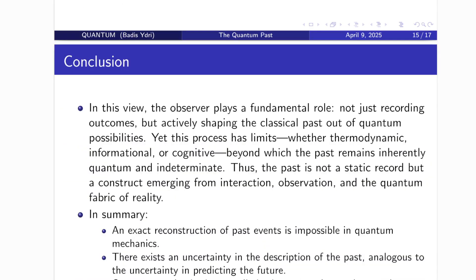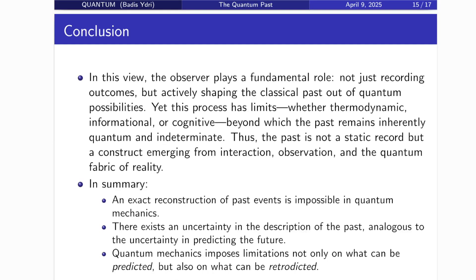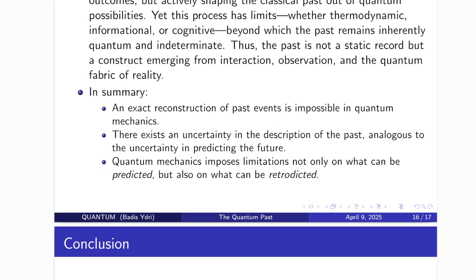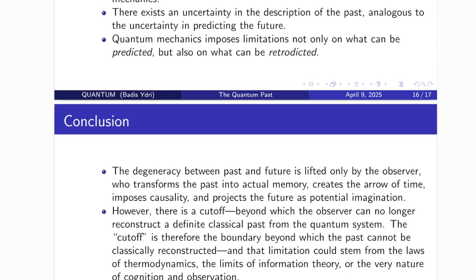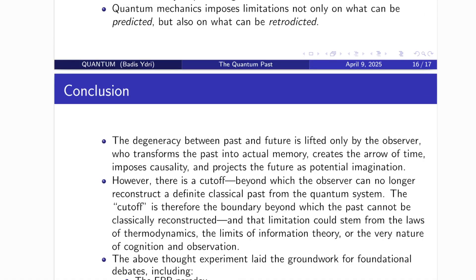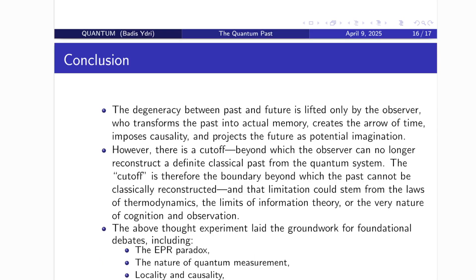Beyond a certain cutoff, set by the limits of thermodynamics, information, or even consciousness, the past remains inherently quantum, irretrievably uncertain. So what does this mean? An exact reconstruction of past events is impossible in quantum mechanics. The uncertainty of the past mirrors the uncertainty of the future. Prediction and retrodiction are governed by the same quantum rules. And the difference between the two? That difference arises not from nature itself, but from us. It is the observer who gives the past memory, gives the future imagination, and gives time its arrow.